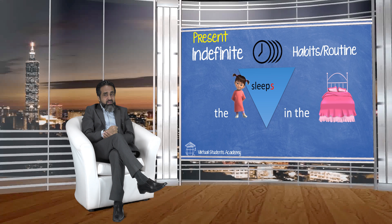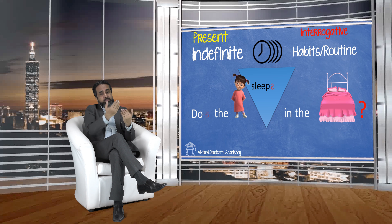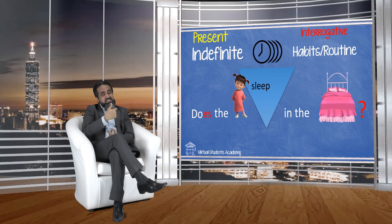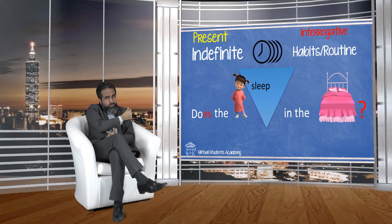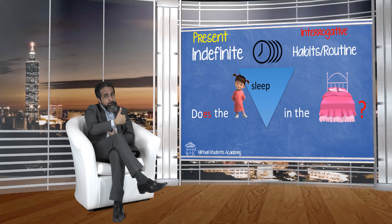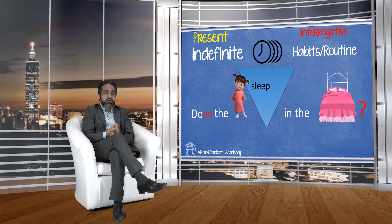Here is a second example. The sentence is: 'The girl sleeps in her bed.' When we form the interrogative for present indefinite with a singular subject, 'does' is added and the 's' is removed from the verb: 'Does the girl sleep in her bed?'